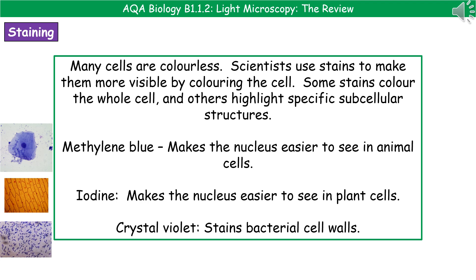Three different stains we could use: first, methylene blue, which you'd use when looking at cheek cells under the microscope — it makes the nucleus easier to see in animal cells, as you can see on the left. Second is iodine, which you'd use for onion cells, and that makes the nucleus easier to see in plant cells, as shown in the middle picture. And finally, crystal violet is the stain used on bacterial cell walls — you can see the little purple blobs in the image are bacterial cells.